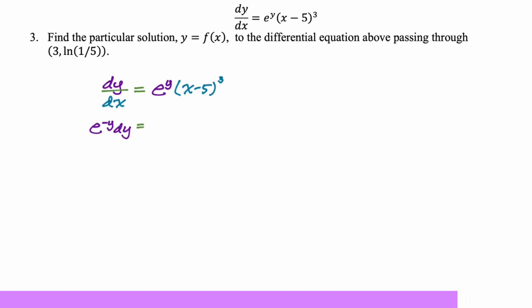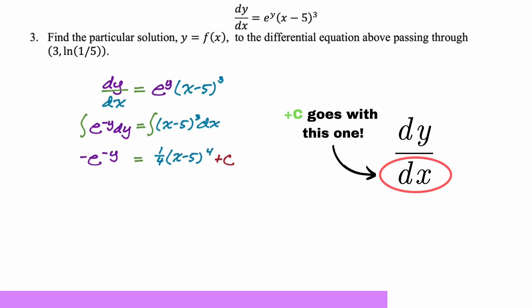We get dy over e to the y, which I'm writing as e to the negative y dy. Don't fall into this trap of thinking that you always are going to get natural logs when you integrate on the y side. A lot of people seem to think that it's not true, but it does happen a lot, but not all the time. And definitely not here. Integral signs.